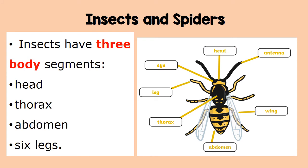Insects have three body segments: the head, the thorax, and the abdomen. Apart from the three segments, they also have the antenna, the eyes, the legs, and the wings.